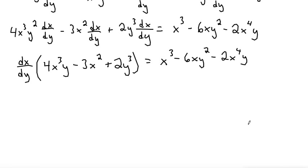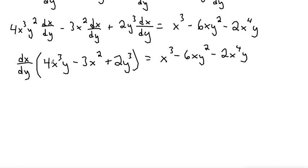The last thing is we divide both sides by what is multiplied by the dx/dy. So we're going to divide both sides by 4X cubed Y minus 3X squared plus 2Y cubed.